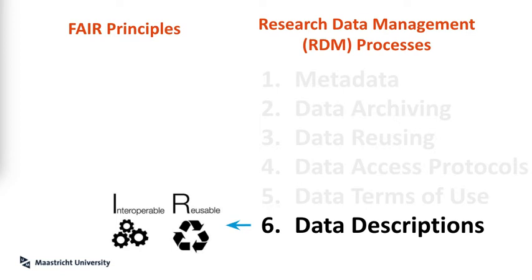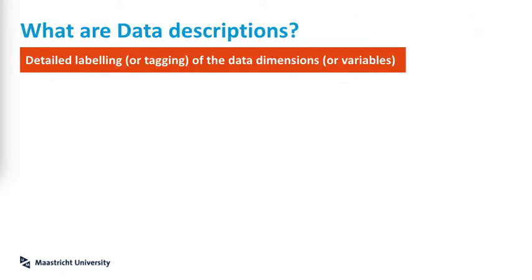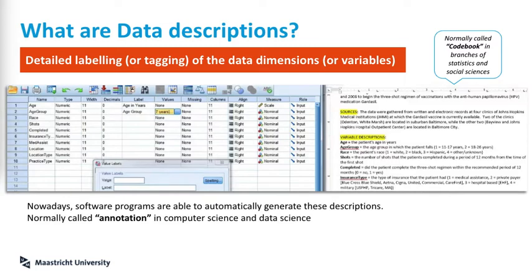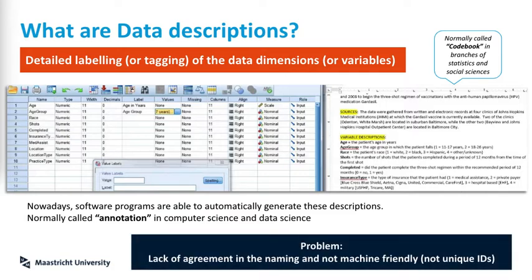Finally, we have data descriptions. Data descriptions are the labeling or tagging of the data dimensions or variables. Normally this is called a codebook in statistics or branches of social sciences, where we would do this manually with programs like SPSS or in a Word document. But these programs are not very machine-friendly. More recently, there are programs that can automatically generate these descriptions — this activity is also called annotation in computer science and data science. The problem is the lack of agreement when creating names for variables, since everyone would come up with their own descriptions and names, with no unique identifiers, making it very hard to combine data sources.